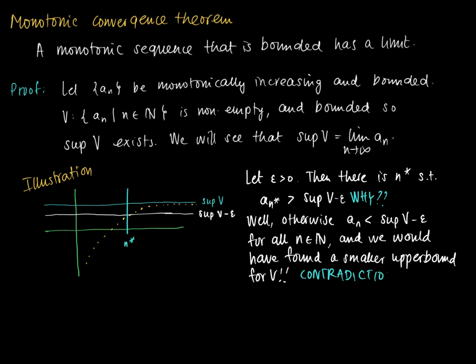This leads to a contradiction. So we may conclude that there must exist an n* such that a_{n*} is at least the supremum of V minus epsilon — that is, a_{n*} is larger than sup(V) minus epsilon.